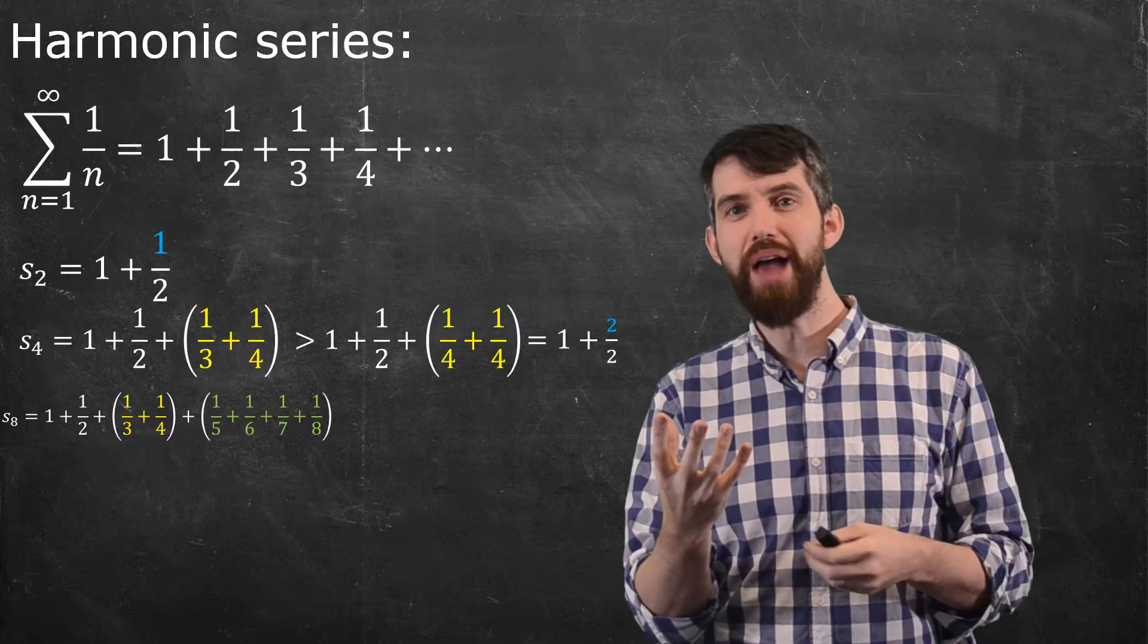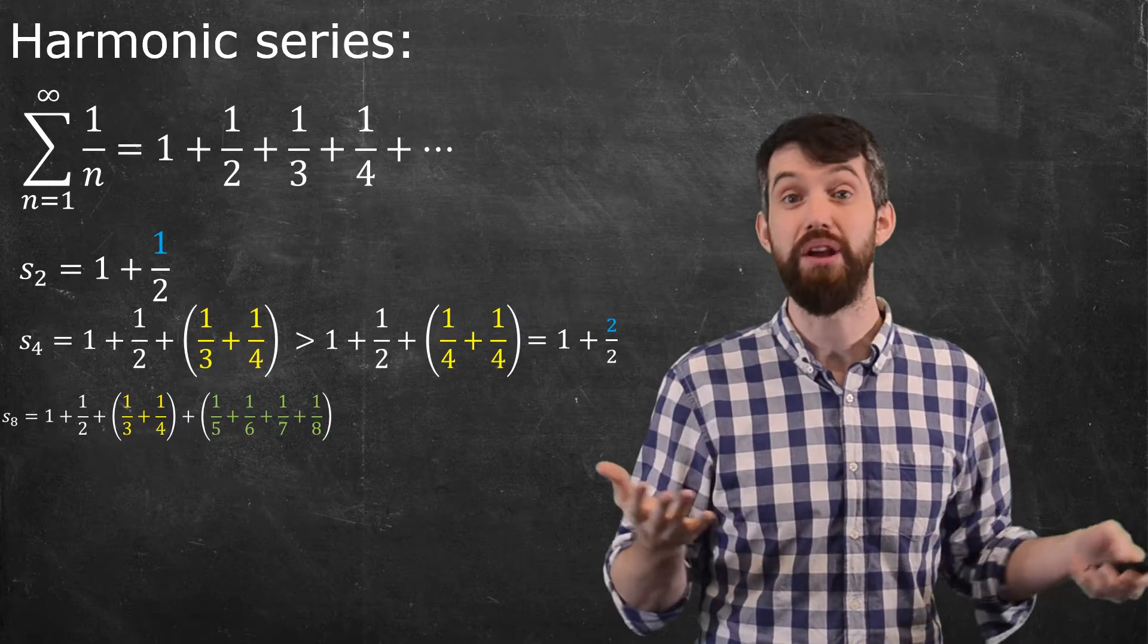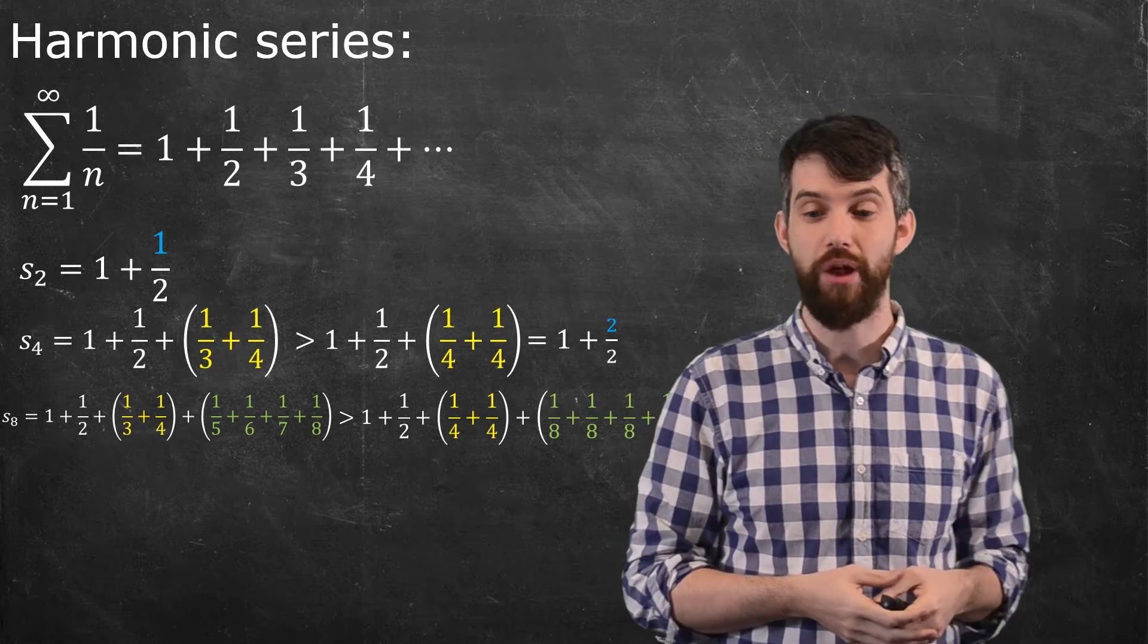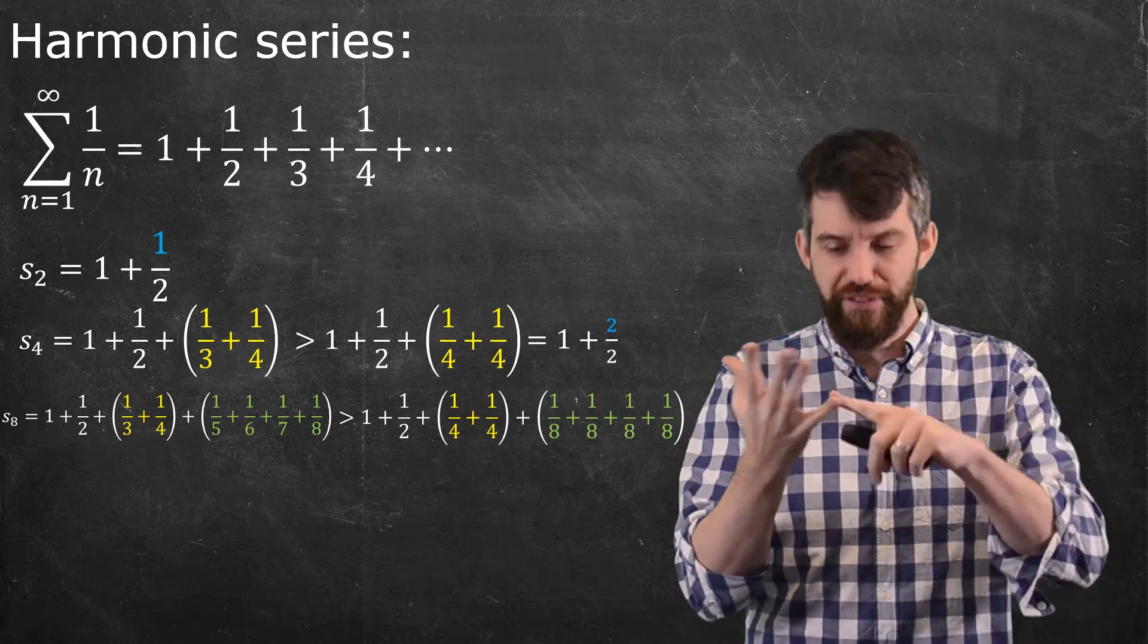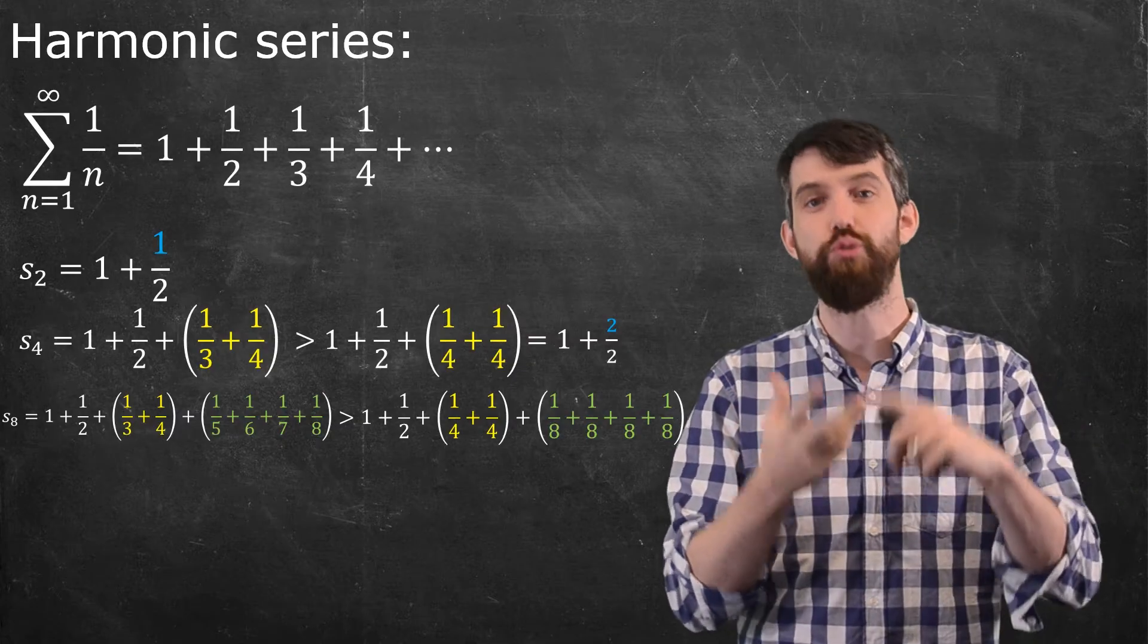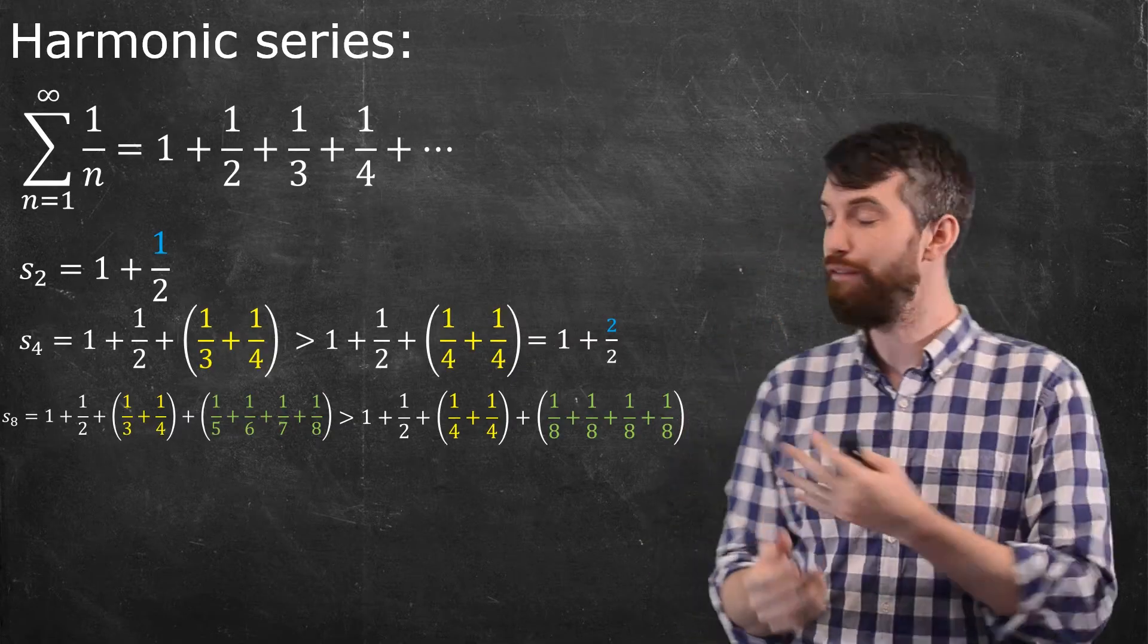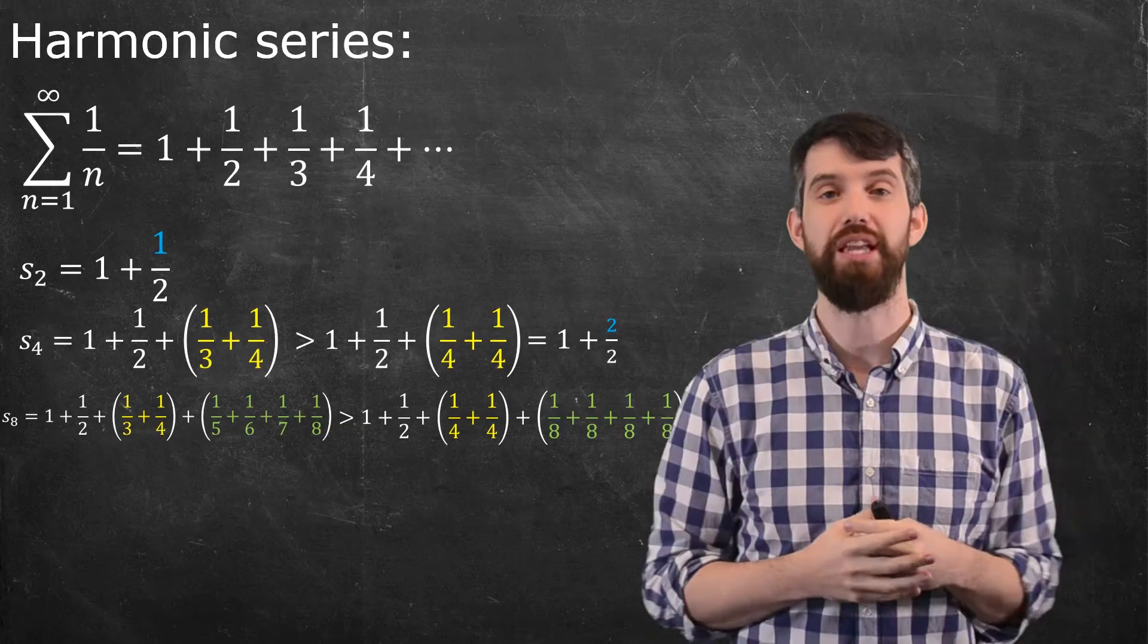The one-third I'm going to say is indeed going to be bigger than the one-fourth. So I'll replace the one-third with the one-fourth. But I'm also going to replace the one-fifth, the one-sixth, and the one-seventh with one-eighths. So I have four different one-eighths. And I have this inequality as a result.